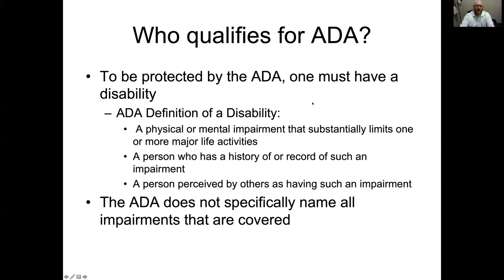Who qualifies for ADA? In order to qualify, one must have a disability. The definition of a disability under ADA is: a physical or mental impairment that substantially limits one or more major life activities, a person who has a history or record of such an impairment, or a person perceived by others as having such an impairment. ADA does not specifically name or list all impairments that are covered.